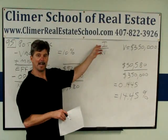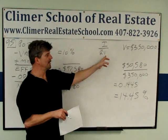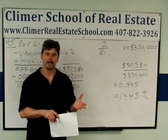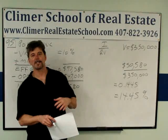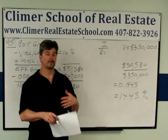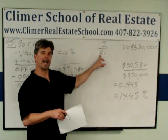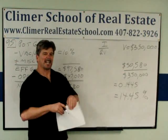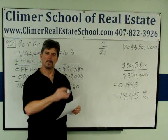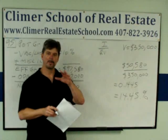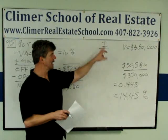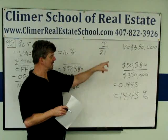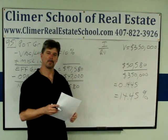I is net operating income. V is value — and it doesn't matter what value: what you paid for it, what you're asking for it, what you sold it for, it doesn't matter. And R is capitalization rate — we call it cap rate sometimes. That's kind of like an internal rate of return to an investor, based on the relationship between the amount of money the building is bringing in versus how much they think it's worth or they paid for it.